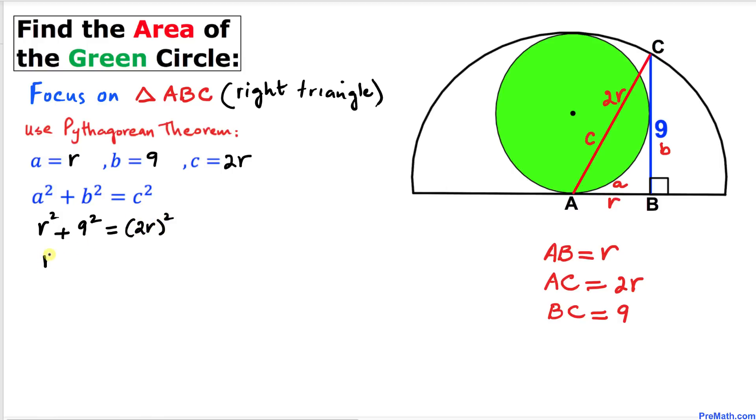Let's simplify it. This becomes r² + 81 = 4r². Let's subtract r² from both sides, so these are gone and we simply end up with 3r² = 81.